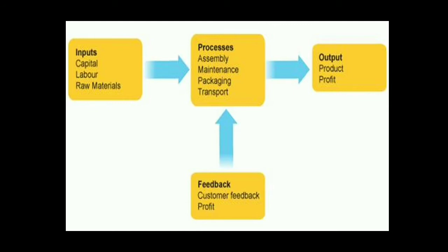Next is processes. In an industry, processes include assembly, maintenance, packaging, and transport. Once the raw material has been brought into the industry, a finished product is made from it. For example, raw cotton is brought in and made into woven clothes. Once manufactured, it is packed nicely, loaded onto a truck, and transported to the market. Making the final products, packaging them, and sending them to their final destination all comes under processes.